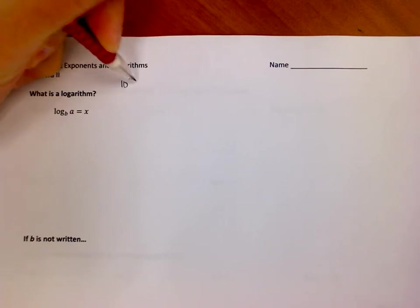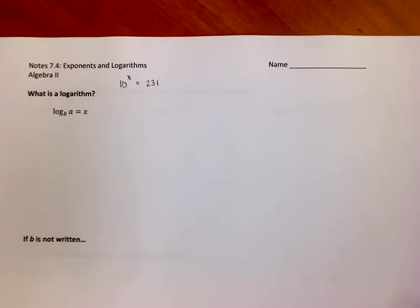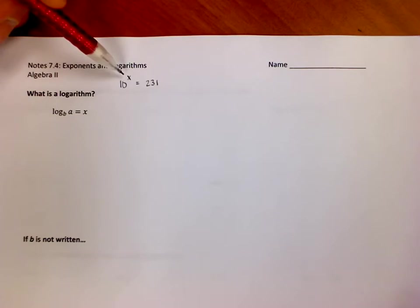That's not a nice neat number, it's not an easy value to get, and so rather than guess and check we've got to find a way to figure out what this value actually is. How do we solve for x if it's not a nice neat value?